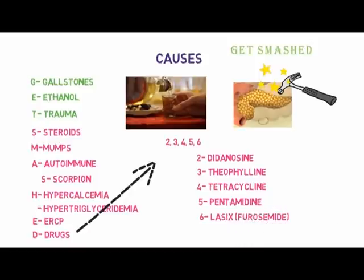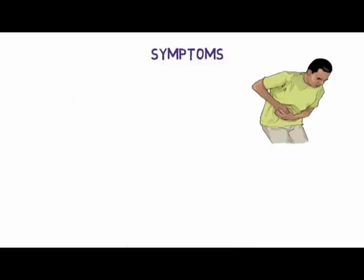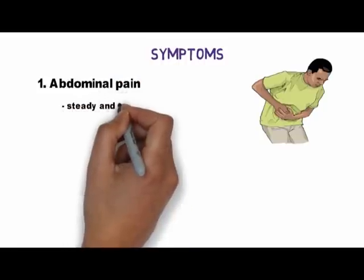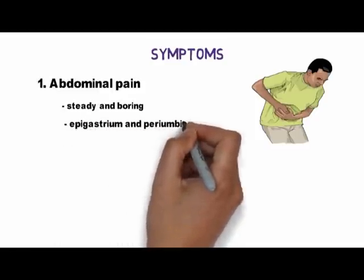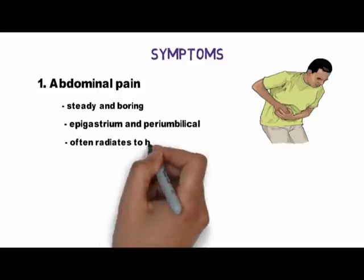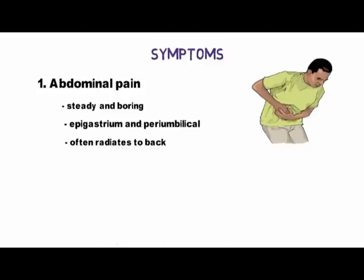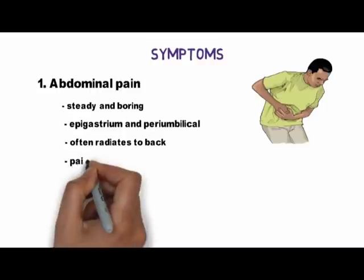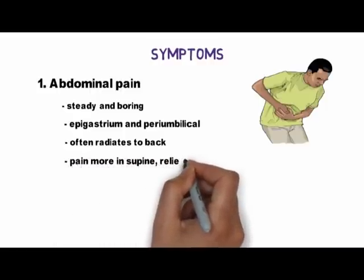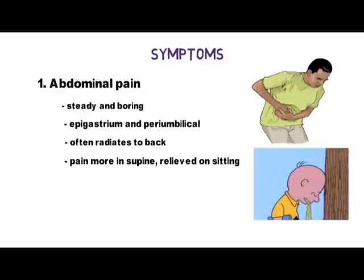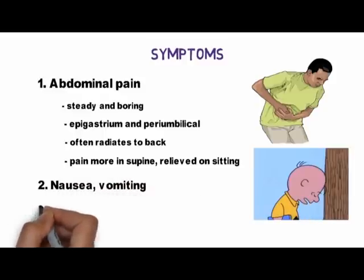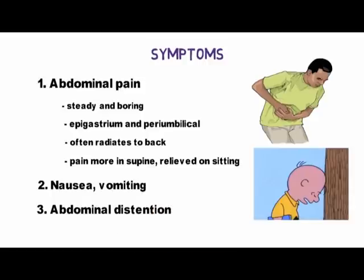Coming on to symptoms: acute pancreatitis presents with abdominal pain. The pain is steady and boring in character, located in the epigastrium and periumbilical region, and often radiates to the back as well as to the chest, flanks, and lower abdomen. The pain is frequently more intense when the patient is supine, and patients may obtain some relief by sitting with the trunk flexed and knees drawn up.